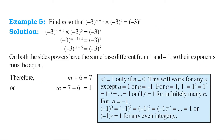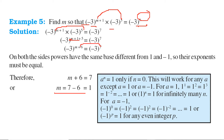We have to find m such that minus 3 to the power m plus 1 multiplied by minus 3 to the power 5 equals minus 3 to the power 7. Since the bases are same, we add: m plus 1 plus 5 equals 7. That is m plus 6 equals 7, which gives m equals 1.